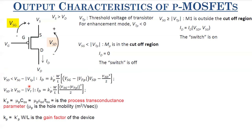When VSD ≥ VSG − |VTP|, device enters saturation and for long-channel devices ID = KP'·(W/L)·(VSG − |VTP|)²/2. For short-channel devices, the equations are the same as discussed, just replacing VGS→VSG, VTN→|VTP|, VDS→VSD. KP' = μP·COX is the process transconductance parameter where μP is hole mobility, and KP = KP'·W/L is the gain factor. Working with VSG and VSD avoids sign confusion since we are in a positive-supply world.